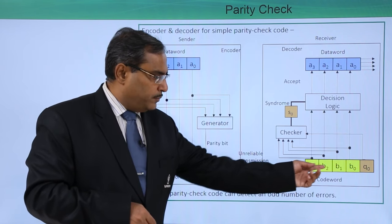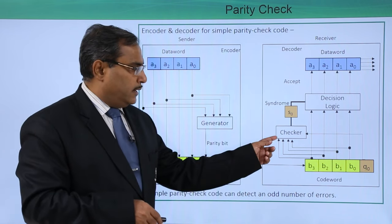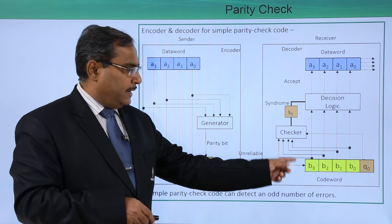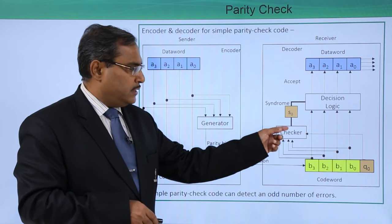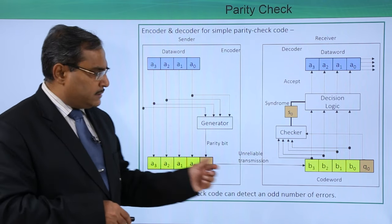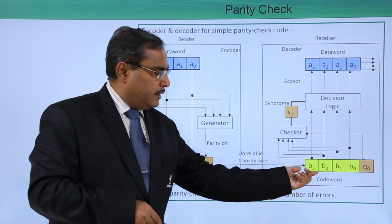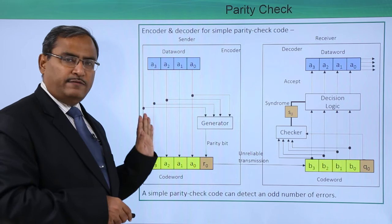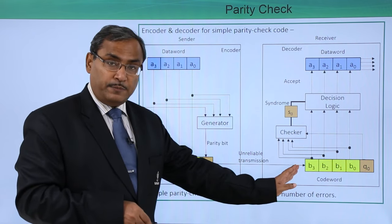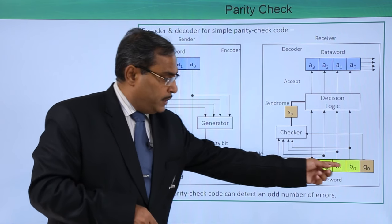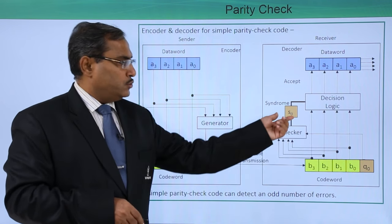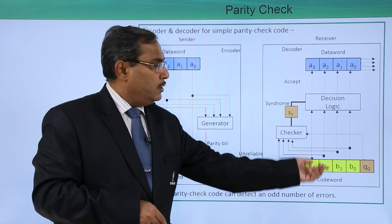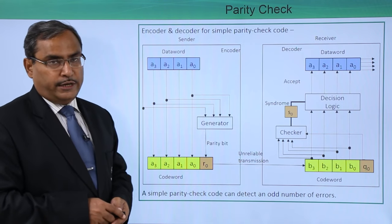Now what will happen? From the received data bits, the checker will produce the respective parity bit. From the received data bits, the parity will be checked — the last bit will be checked against the computed parity. That will produce a syndrome. The syndrome means: from the received data bits, we produce the parity bit using the same logic. If we applied even parity at the encoder, we apply even parity here too. Then the computed parity bit is XORed with the received parity bit, producing the syndrome, which decides whether the data is correct or wrong.